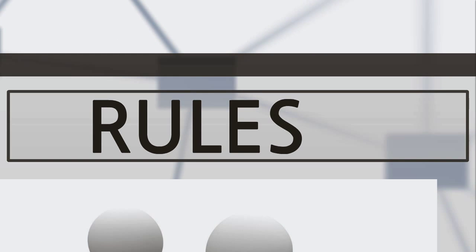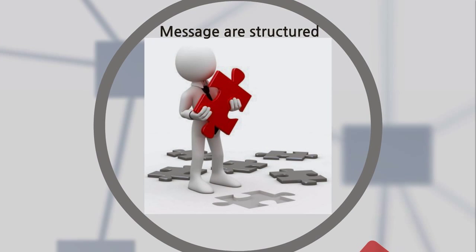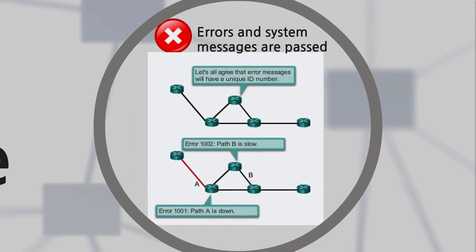A world without rules is chaos. So now we're going to talk about the rules that govern communications, referring to protocols. A protocol is a form or agreement that enables effective communication. A communication protocol allows us to see how the message is structured, the process by which devices share information, and how errors and system messages are passed between devices.